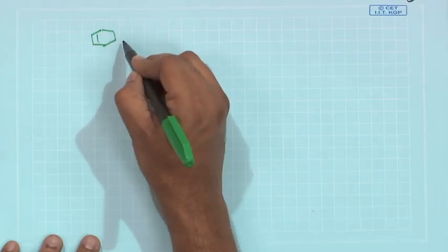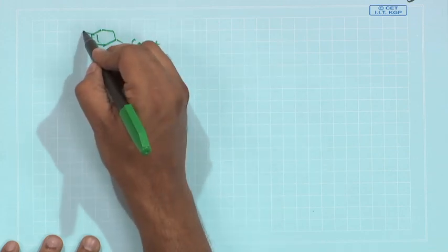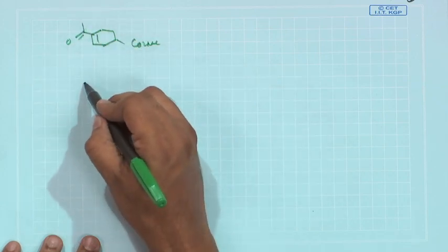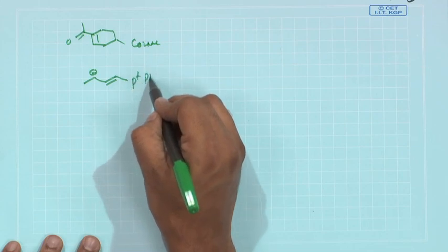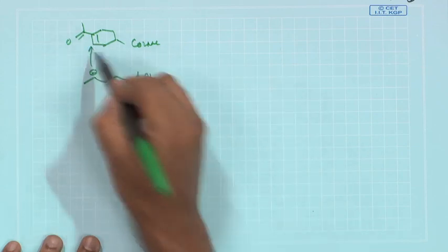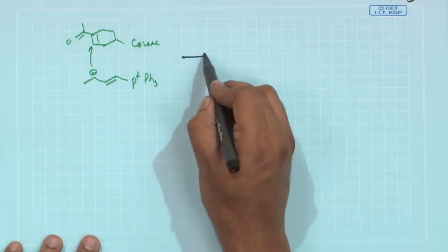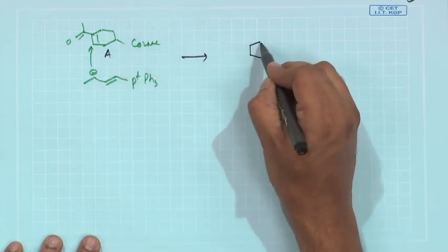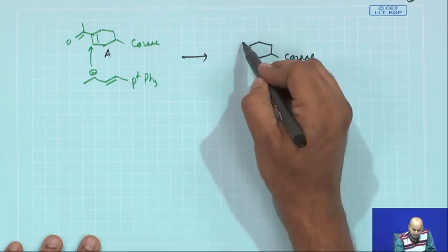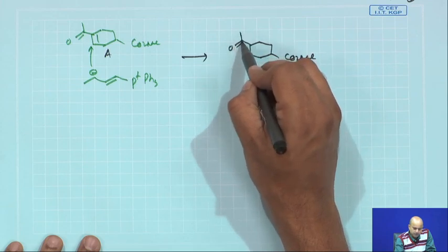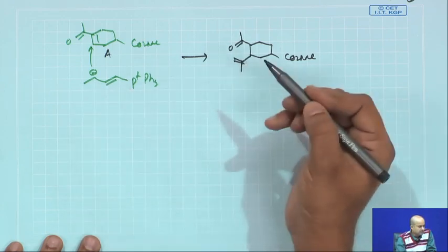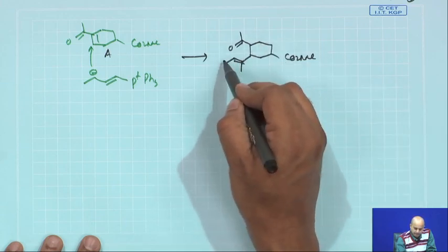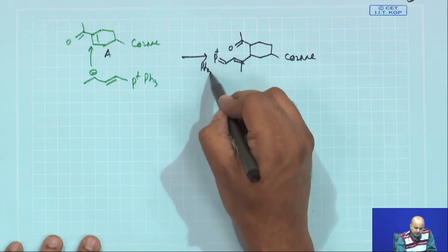Let us talk about the forward synthesis. Starting from intermediate A, whose structure has CO₂Me and MECOMe: the VTIC ylide undergoes or has this resonating structure Ph₃P⁺. Initially this goes in a Michael fashion — reacting with compound A — so we get CO₂Me, the methyl ketone is there, and the Michael attack of this VTIC ylide takes place, giving Ph₃P⁺. This is also a VTIC ylide.